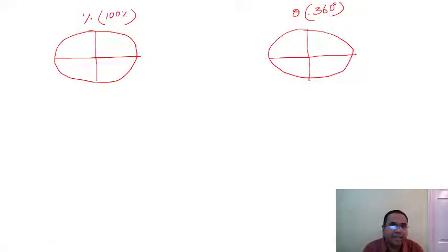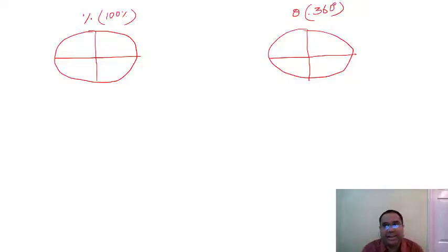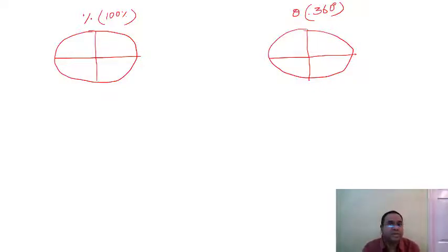So the basic rule is: if the pie chart breakup is given in percentage, the total must equal 100%. If it is given in degrees, the total sum of all breakups must equal 360 degrees.